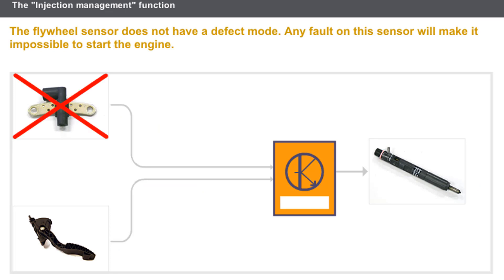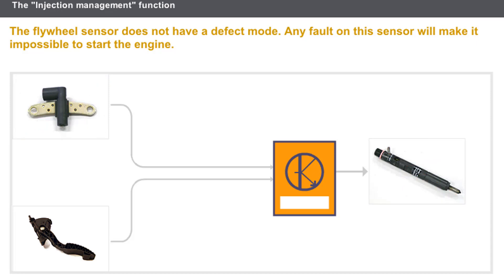The flywheel sensor does not have a defect mode. Any fault on this sensor will make it impossible to start the engine. An accelerator pedal position sensor fault may lead to a constantly high engine speed.